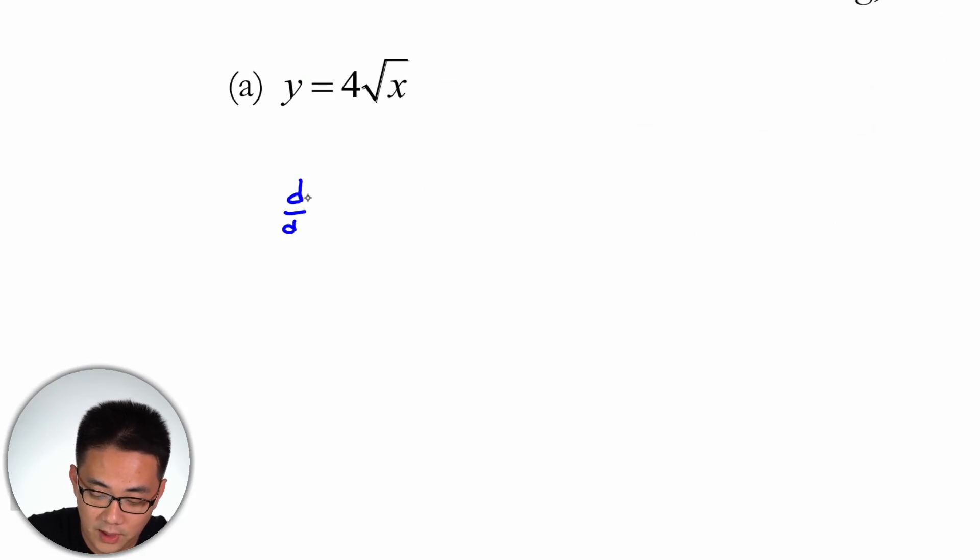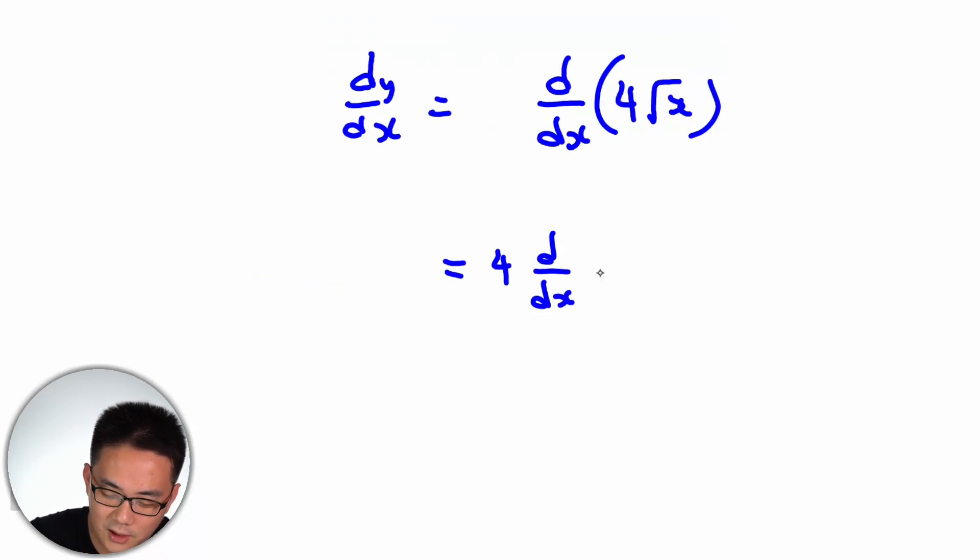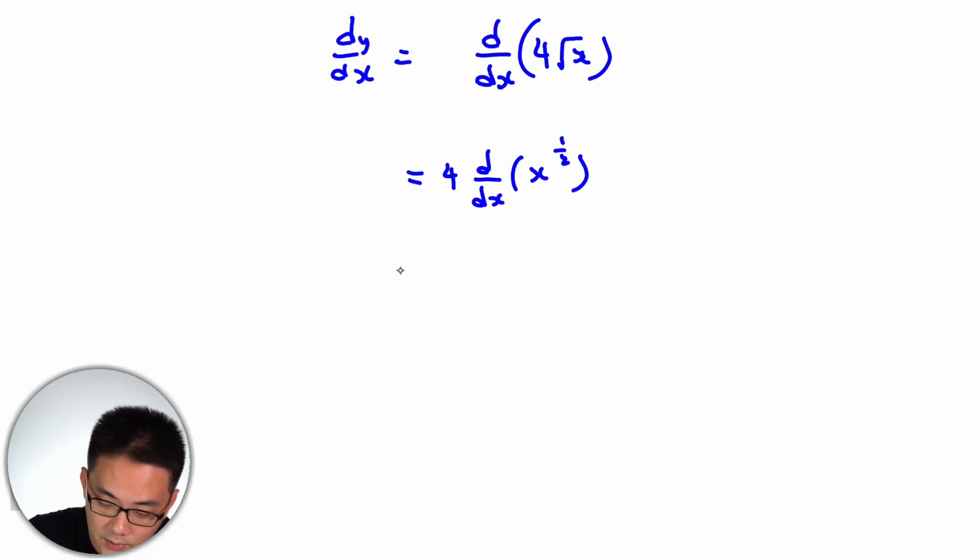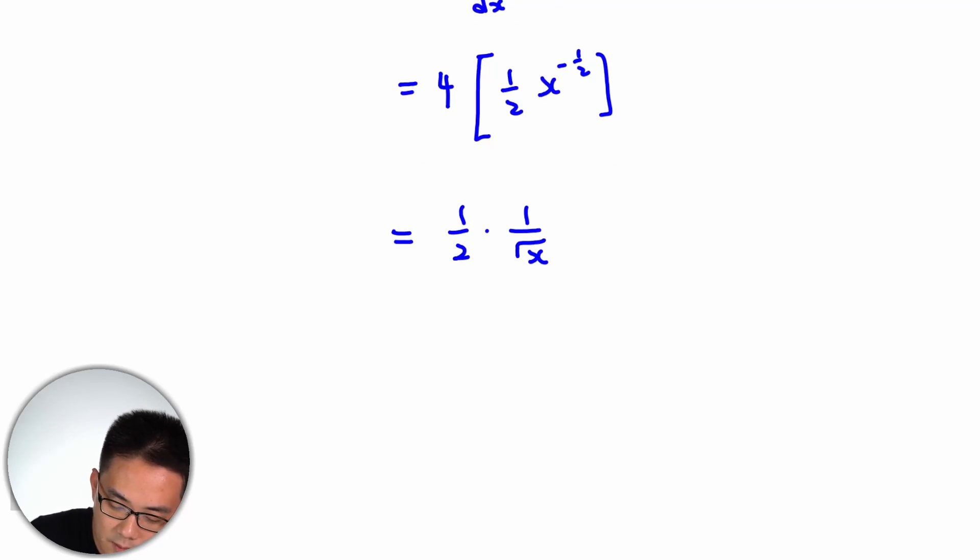If you are told to find dy/dx, so dy/dx will just be d/dx of 4√x. So differentiate this. The 4 could be brought out. So this is 4 d/dx. This is x to the half. And this will just be 4. Similarly, this is half. x to the half minus 1 will be minus half, and that will be 2. So it's 1 over 2√x. You have to do this carefully. This is 1 over 2√x.